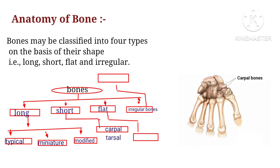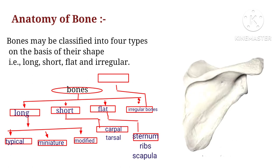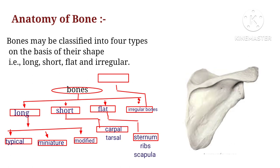Short bones include examples like the cuboid and scaphoid. Flat bones in your body include the bones of your skull, sternum, ribs, and scapula.